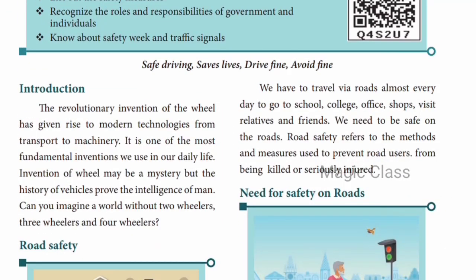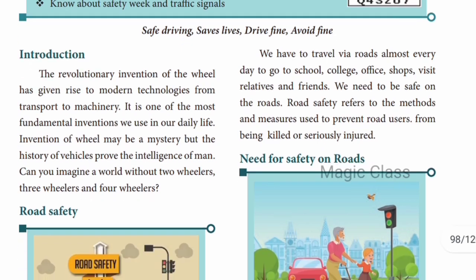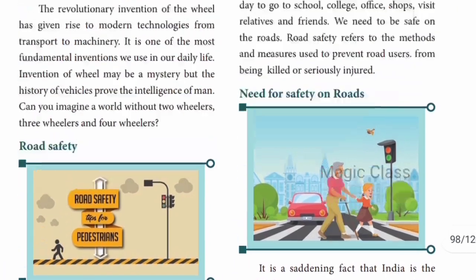In the introduction, in olden times the wheel was discovered, and then modern technology came along. From transport to machinery, you now have a number of vehicles on the road - two wheelers, three wheelers, and four wheelers. We need to use them safely and avoid accidents for others on the road. Road safety is very, very important.